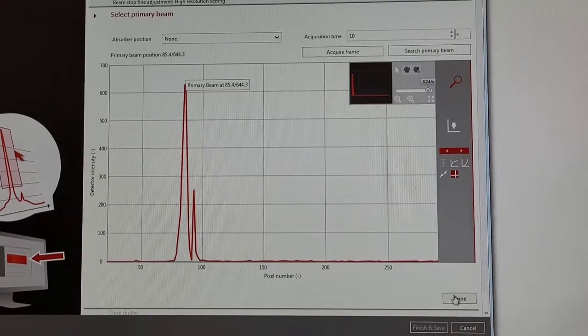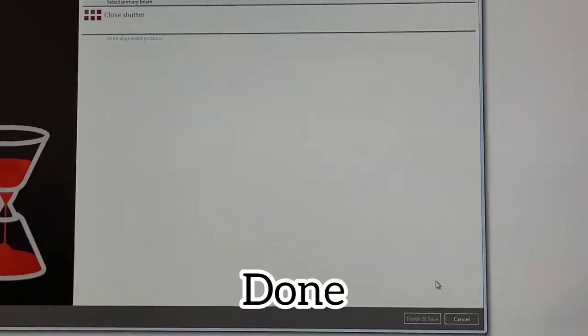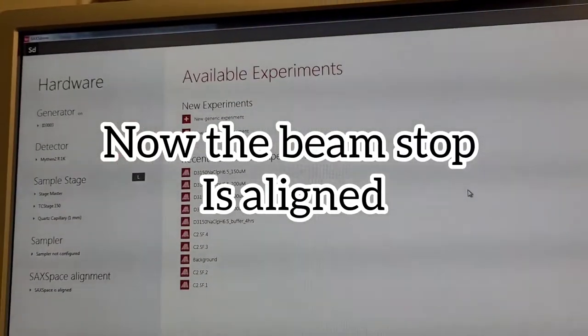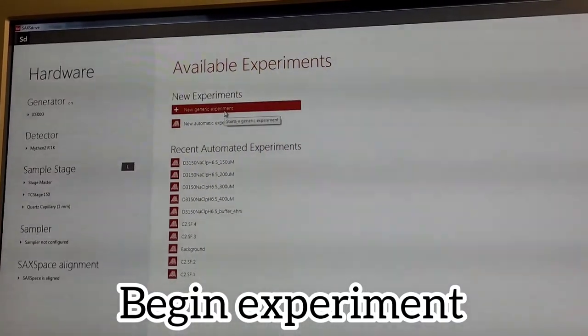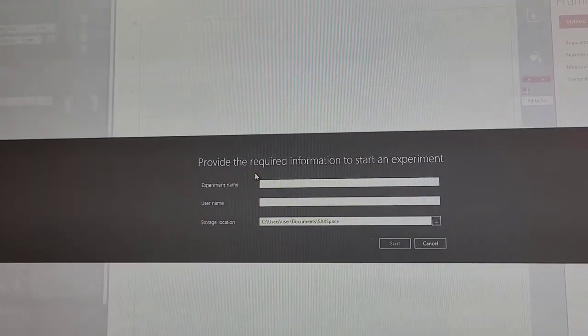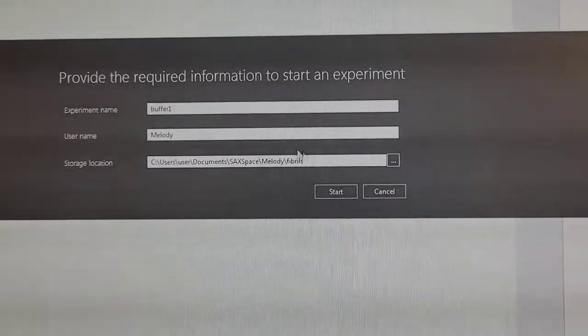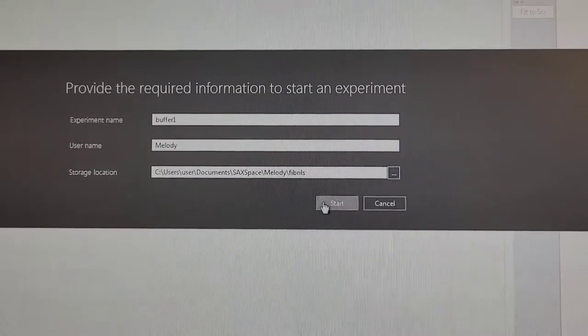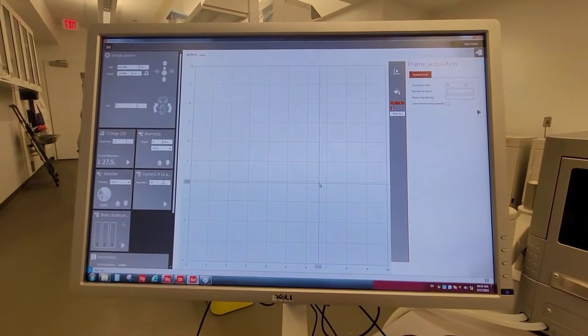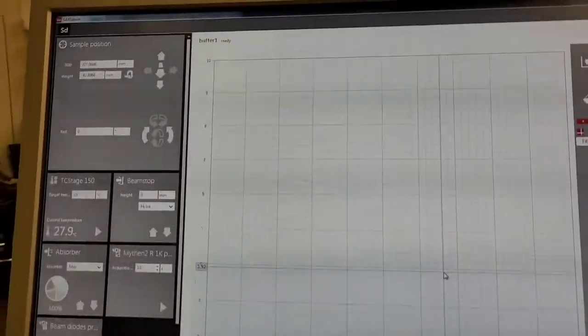Every time you do an alignment it is good for 2 days. You can do a lot of measurements in that time. But after 2 days it's not really reliable and you should do another alignment again. Now I can finally tell the software where I want to save my file and what it will be called.